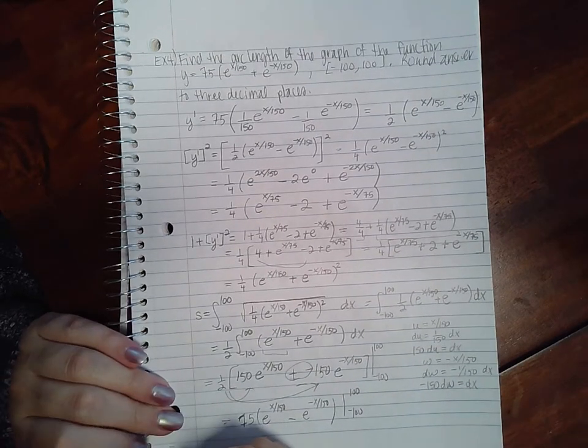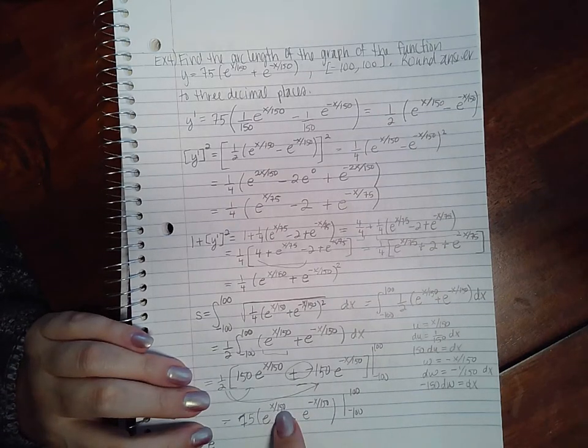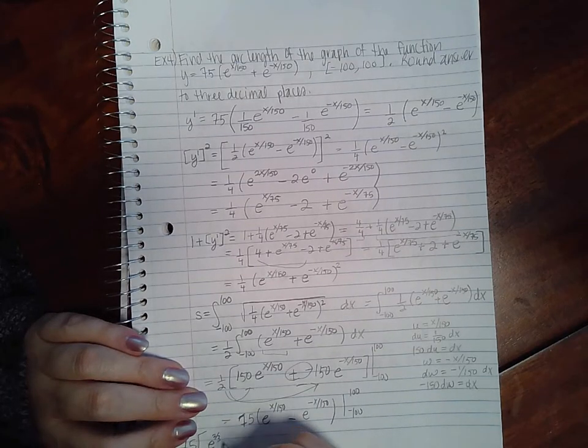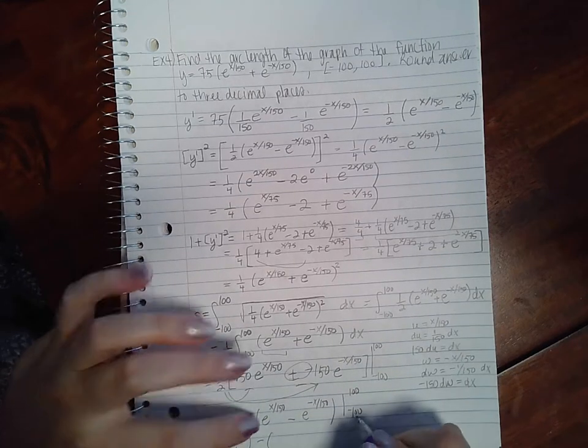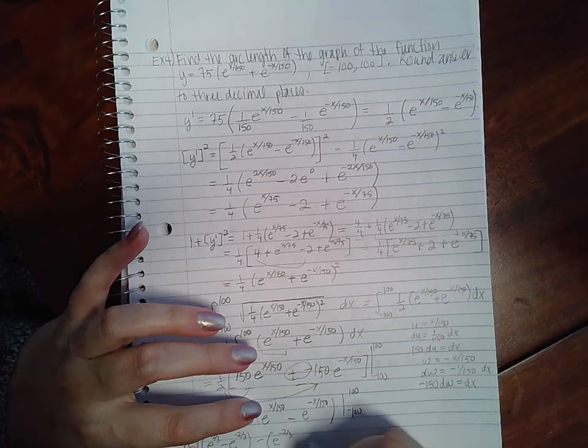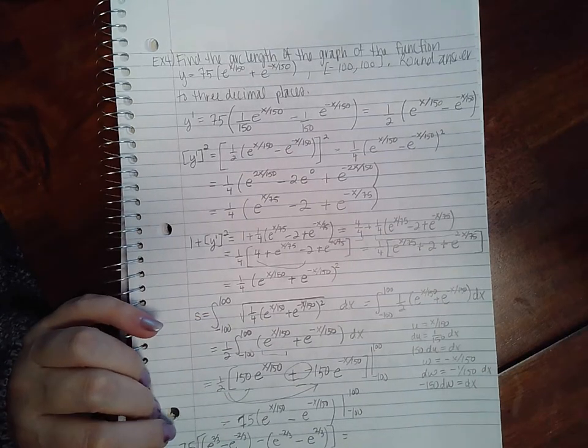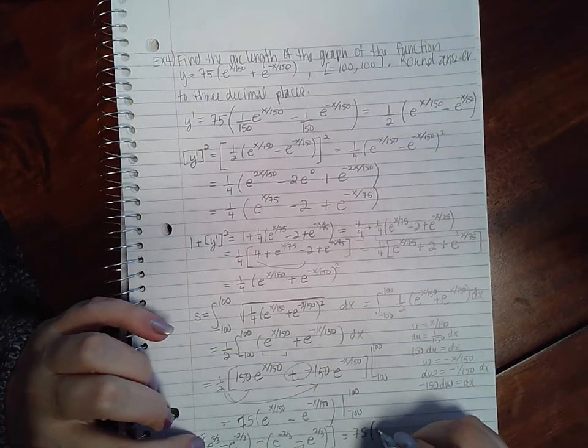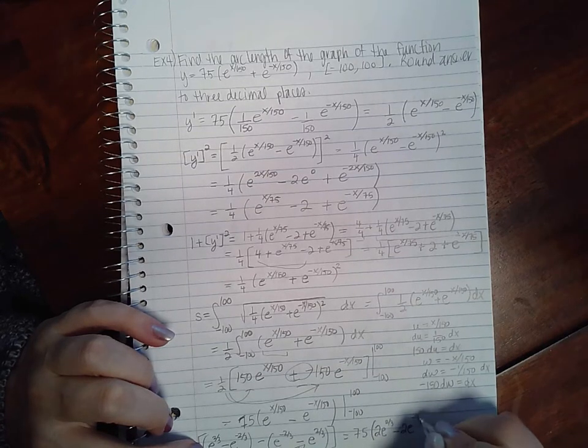So let's plug these in. We get 75 times, e to the 100 over 150 actually reduces to 2 thirds, minus e to the negative 2 thirds, minus, and then when you plug in that it will give you negative 2 thirds, and when you plug in that it will become positive 2 thirds. So this will become negative and this one will become positive. So you get 75 times 2 e to the 2 thirds minus 2 e to the negative 2 thirds.